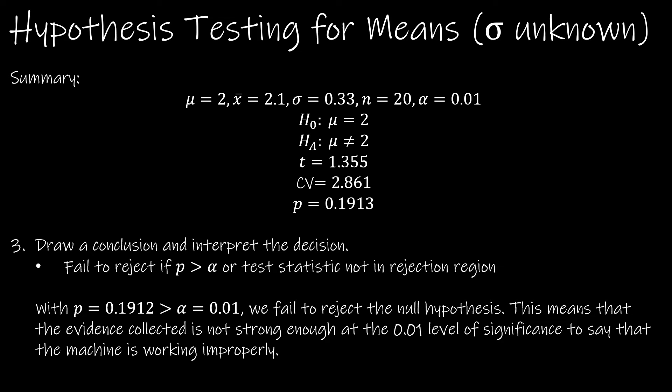We already talked about the fact that our t-score does not fall in the rejection region. But in addition, we can see that our p-value is clearly greater than our alpha level. And therefore, we fail to reject the null.